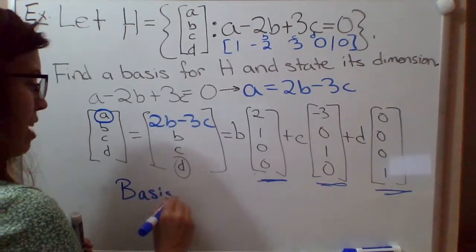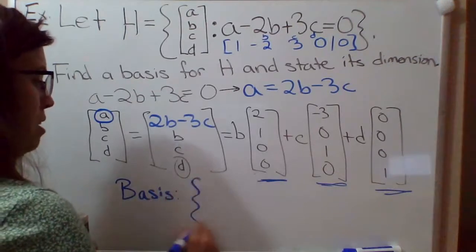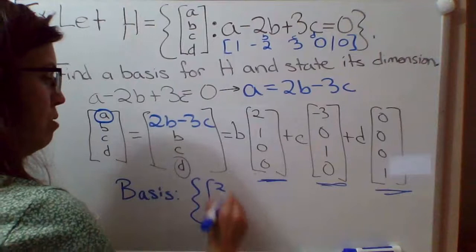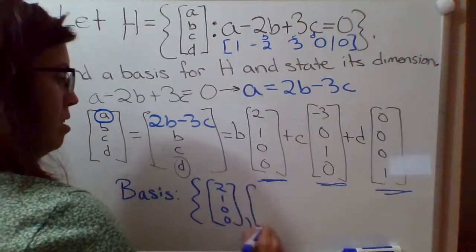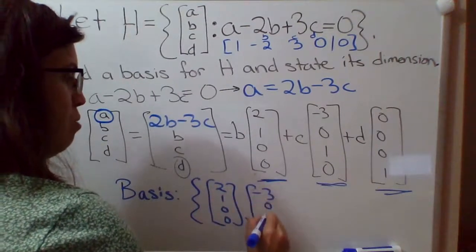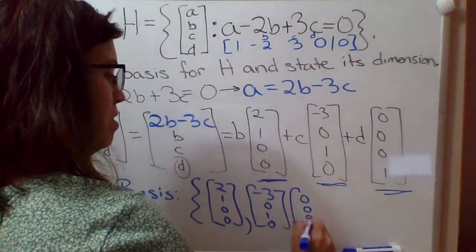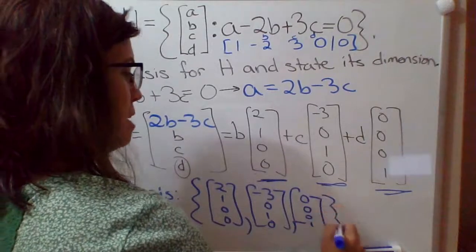a basis for H would be the collection of those three vectors: 2, 1, 0, 0, negative 3, 0, 1, 0, and 0, 0, 0, 1. Okay, so there's your basis.